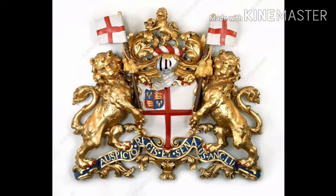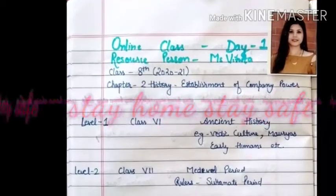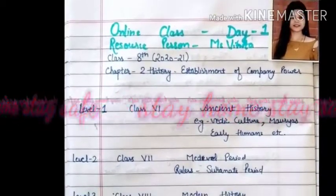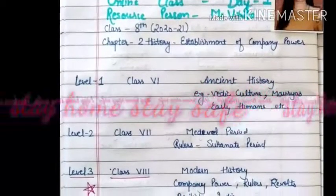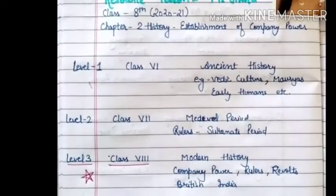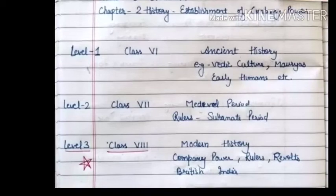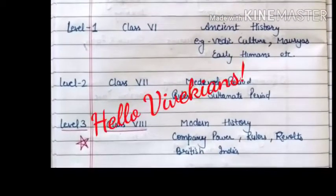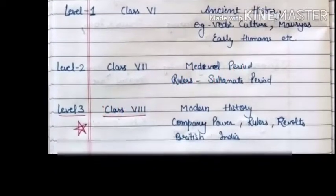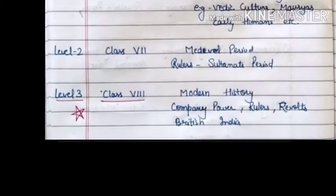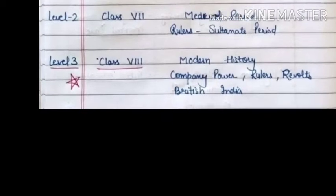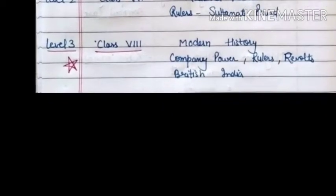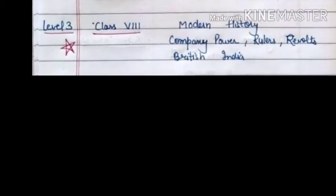From class 6 to 8, the first level was in class 6 where you read about ancient history — that is, the culture, Mauryas, and early humans. In the second level, that was in class 7th, you read about medieval history where you read about the Sultanate period. Now this is the third level of history; in this you will read modern history, where company power, rulers, revolts, and topics like British India will be discussed.